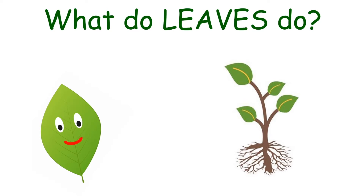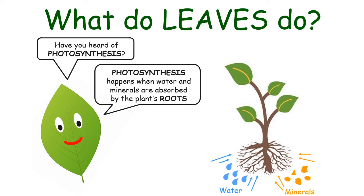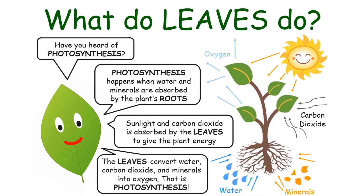What do leaves do? Have you heard of photosynthesis? Photosynthesis happens when water and minerals are absorbed by the plant's roots. Sunlight and carbon dioxide are absorbed by the leaves to give the plant energy. The leaves convert water, carbon dioxide, and minerals into oxygen. That is photosynthesis.